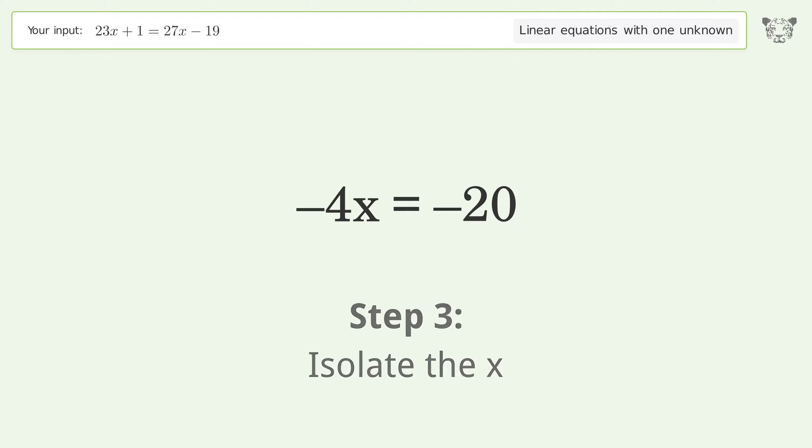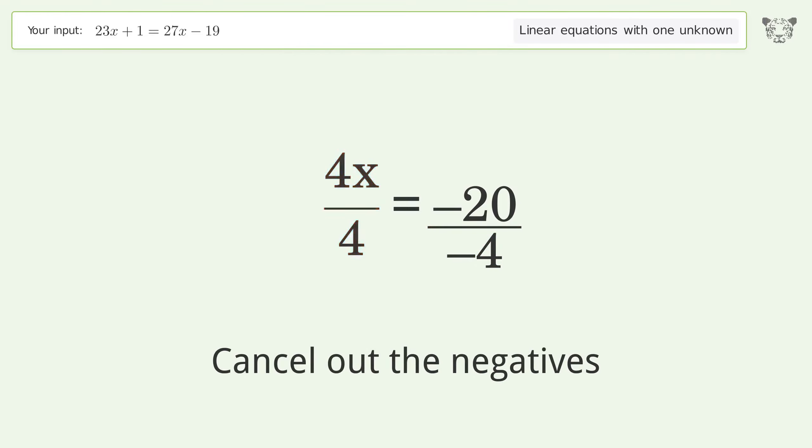Isolate the x. Divide both sides by negative 4. Cancel out the negatives. Simplify the fraction. Cancel out the negatives.